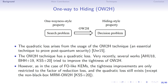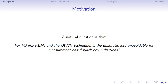The quadratic security loss arises from the use of the one-way-to-hiding technique. The one-way-to-hiding technique is an essential technique to prove post-quantum security — it gives a reduction from an extraction algorithm against a search problem to a decision problem. Besides FO-like constructions, one-way-to-hiding was also used to prove the security of key exchange, MACs, and signatures. Recently, several works tried to improve the tightness of one-way-to-hiding; however, the tightness improvements are only in the factor of reduction loss, and the quadratic loss still exists. Therefore, our natural question is: for FO-like KEMs and the one-way-to-hiding technique, is the quadratic security loss unavoidable for measurement-based black-box reductions?